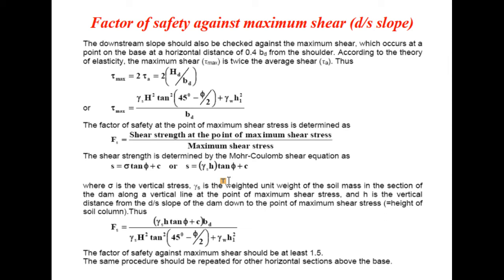The downstream slope should also be checked against maximum shear, which occurs at the point on the base at a horizontal distance of 0.4 times BD. According to the theory of elasticity, the maximum shear tau-max is twice the average shear tau-average. Therefore, tau-max equals 2 times HD divided by BD, where HD is the total horizontal force including water pressure.